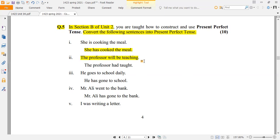This is the future continuous tense. We have to change it to present perfect. The professor has taught. So here you have to add has. You have to add has and change the verb. The third one is 'He goes to school daily.'